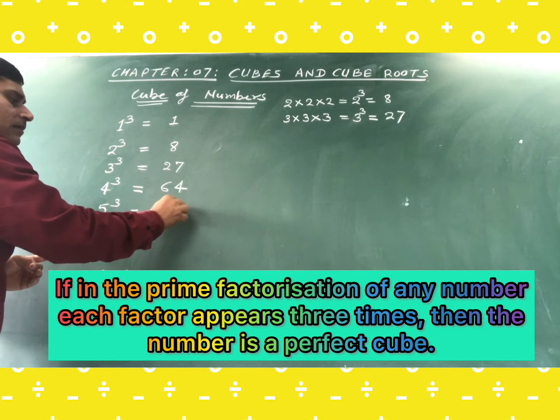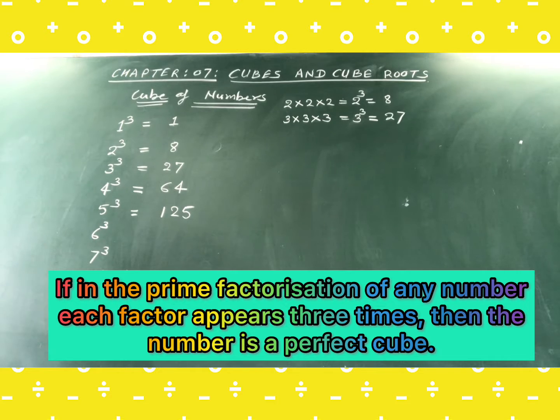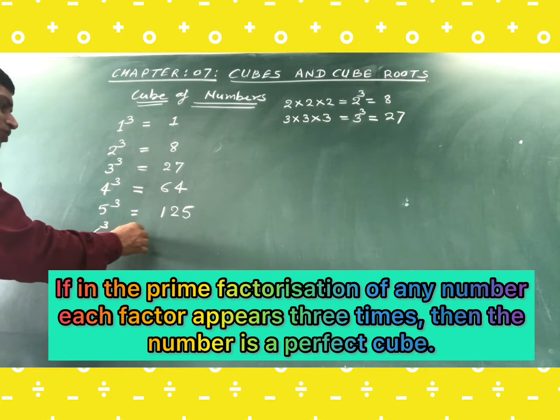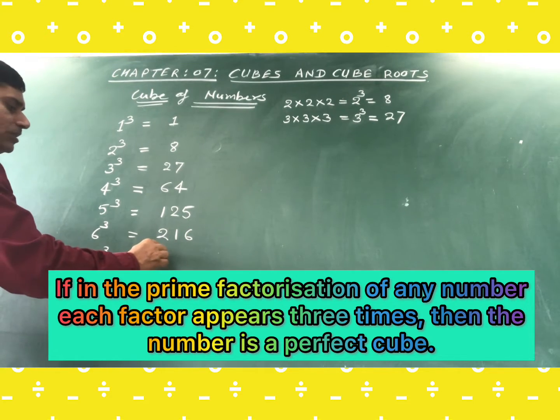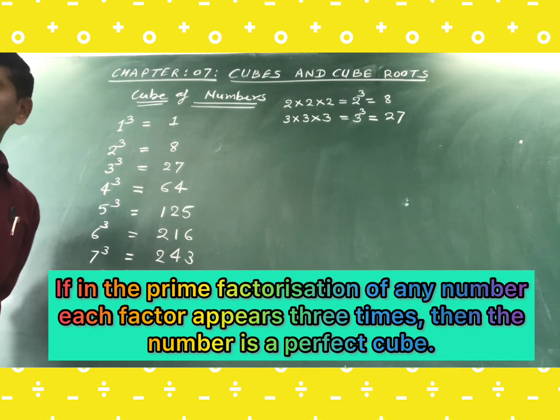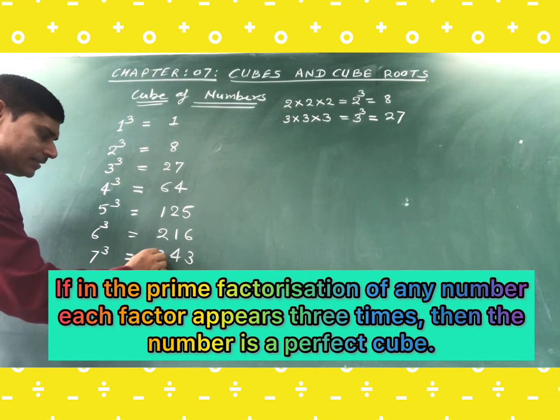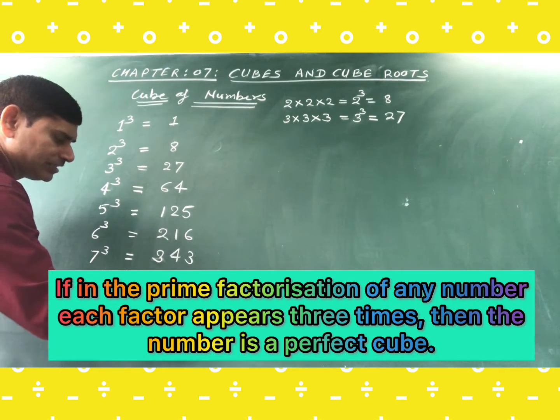And after that, 5 cube means that is 125, because 5 into 5 into 5, this is 125. And 6 cube means this is 216. And 7 cube means 343. And after that, 8 cube means 512.